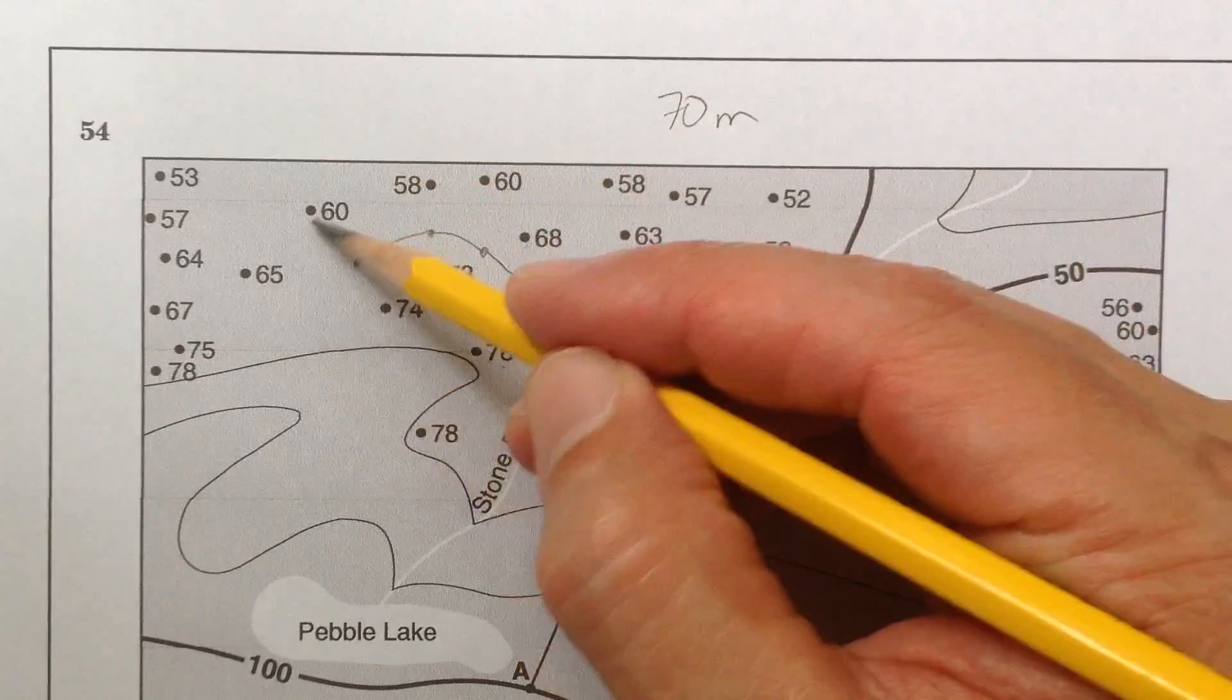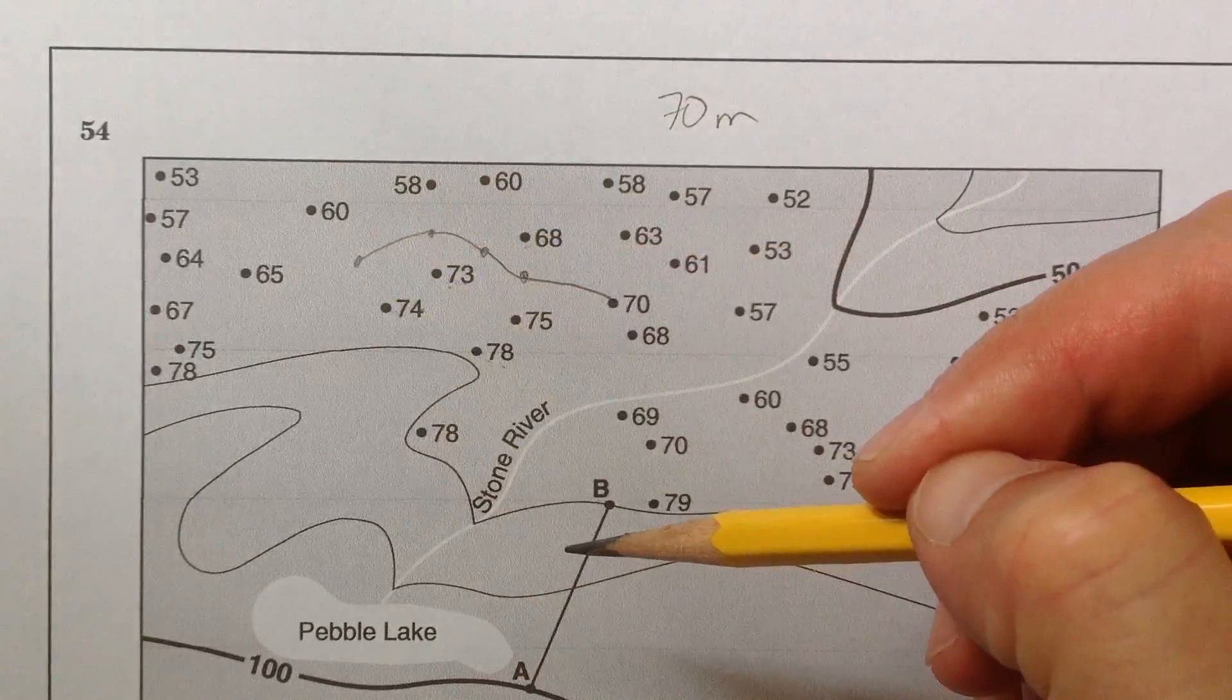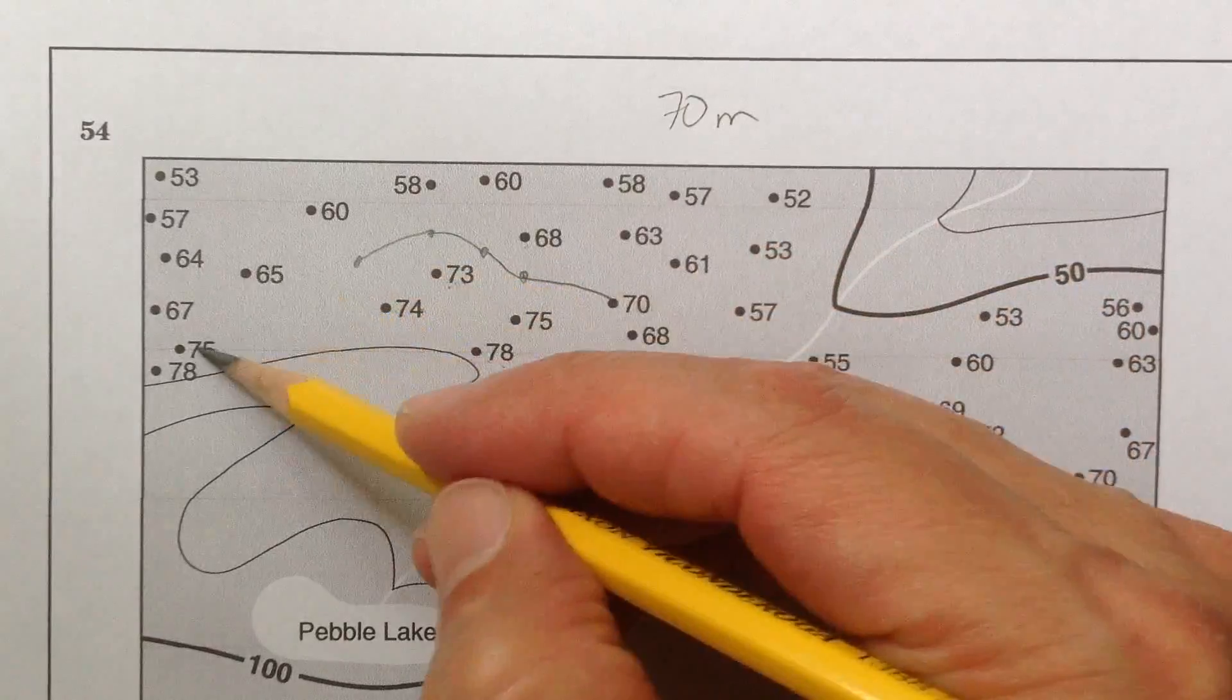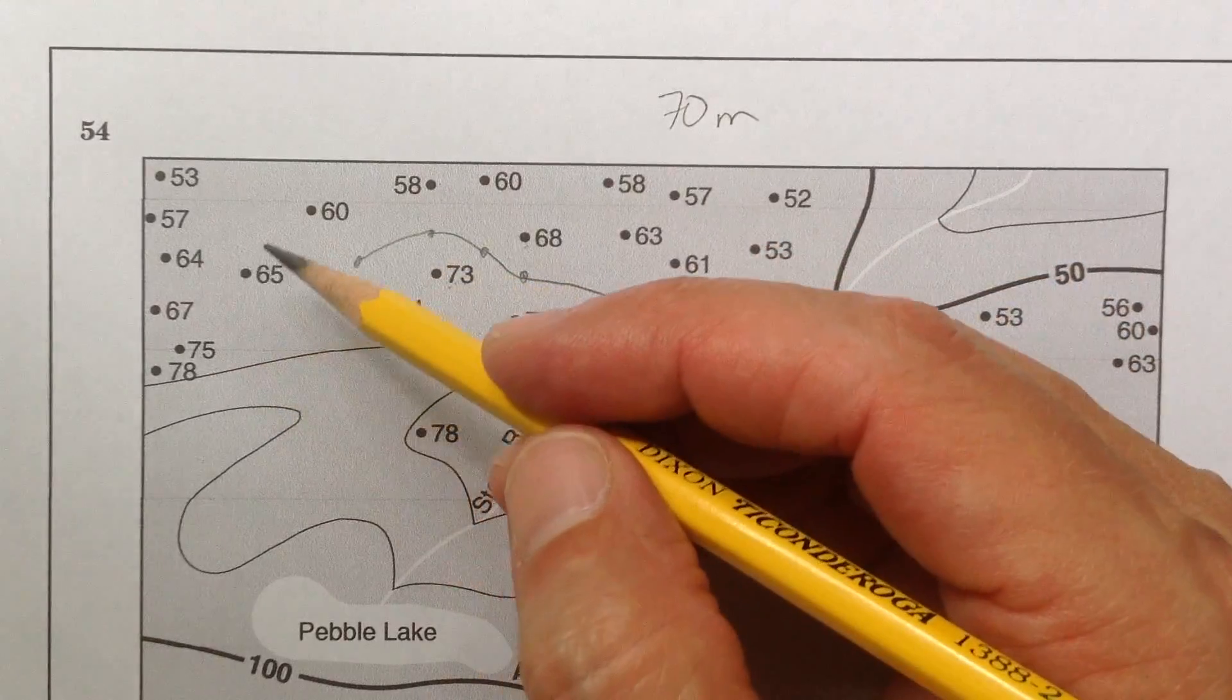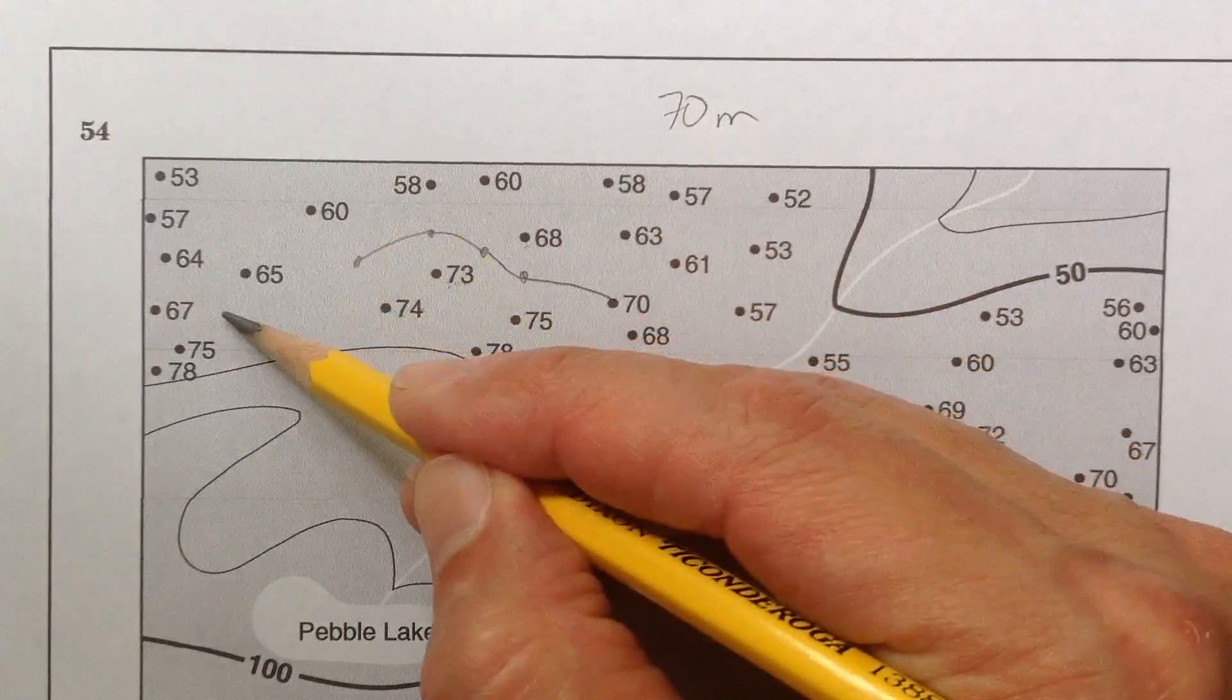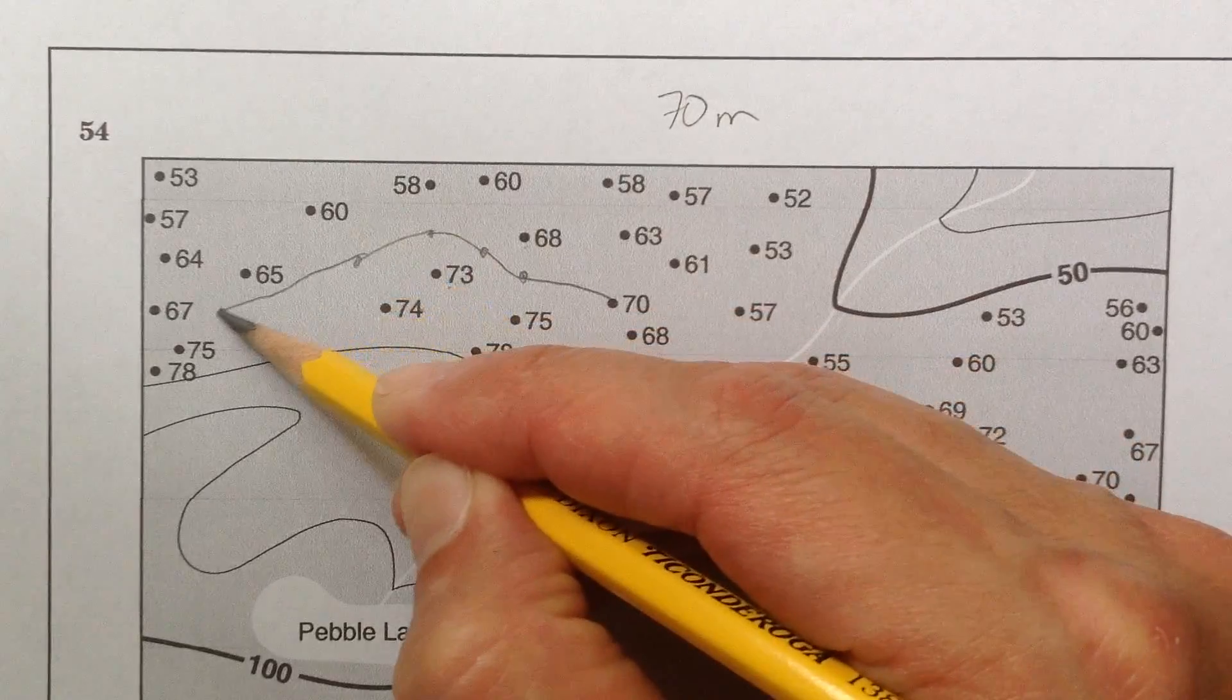Is 70 between 60 and 65? No, it's not. Is 70 between 65 and 75? Yes, it is. It's right there. So now I'm here. Now the numbers get a little tight.